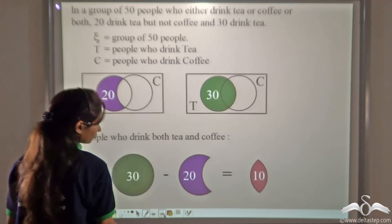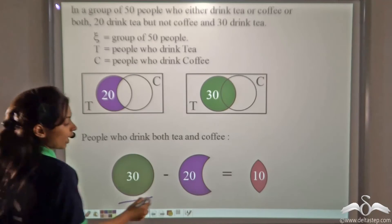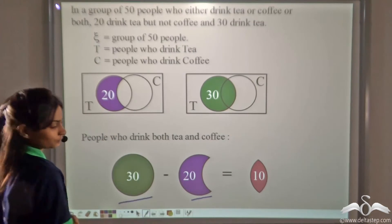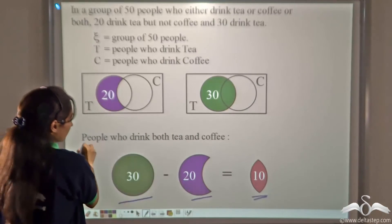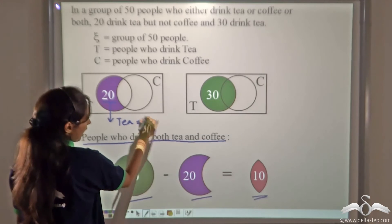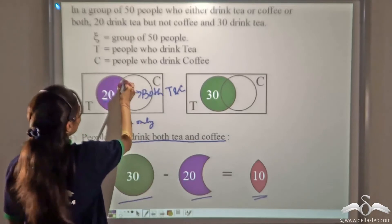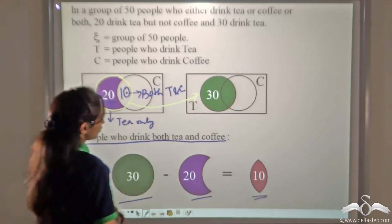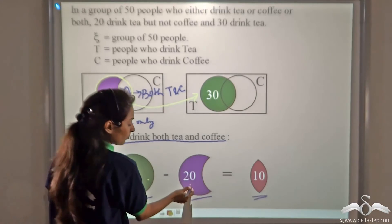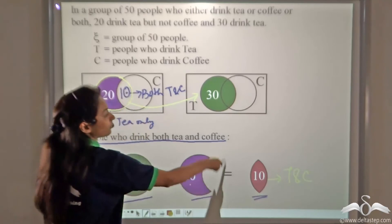There are thirty people who drink tea or tea and coffee both, and twenty who strictly drink only tea. Subtracting twenty from thirty gives ten — those are the people who drink both tea and coffee, which is the intersection of tea and coffee. Twenty plus ten gives thirty total, confirming it is correct.